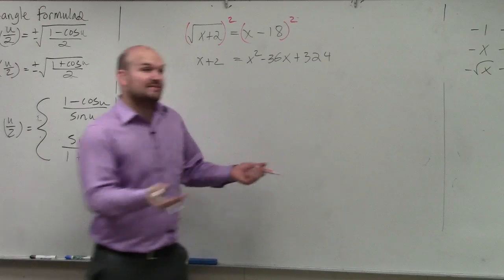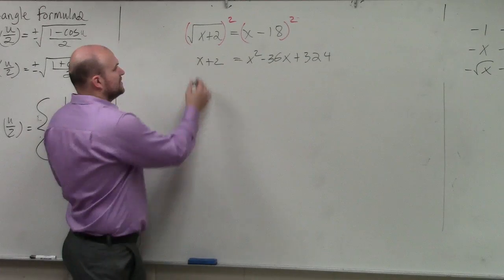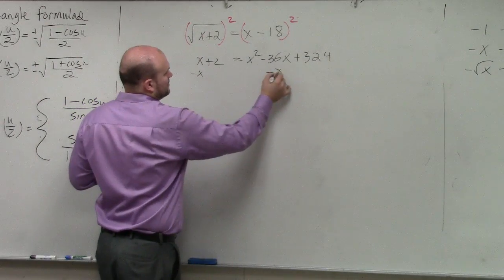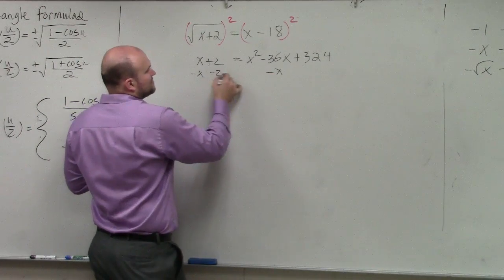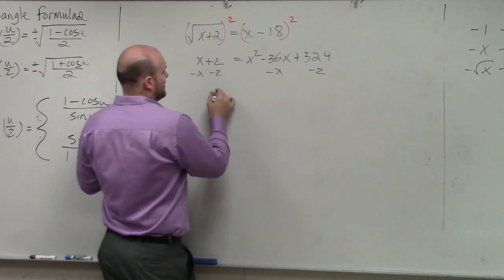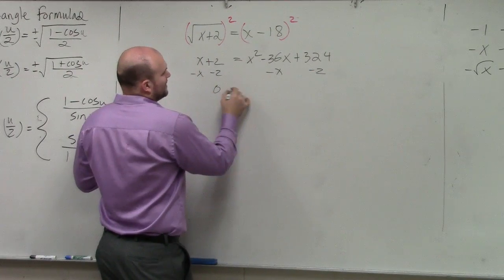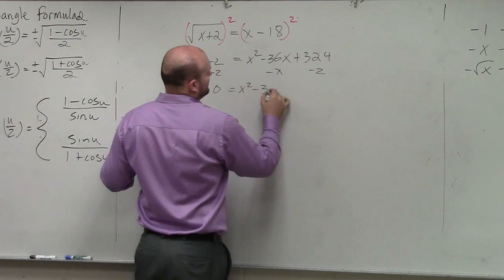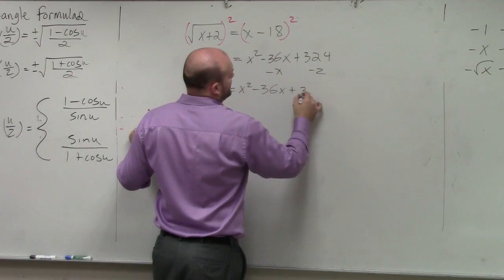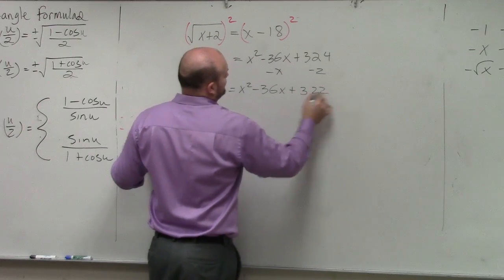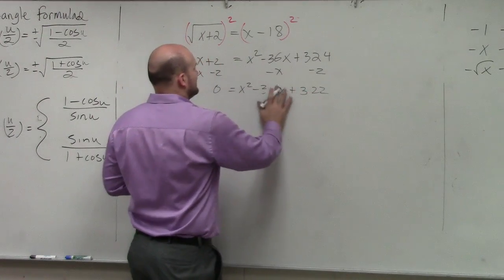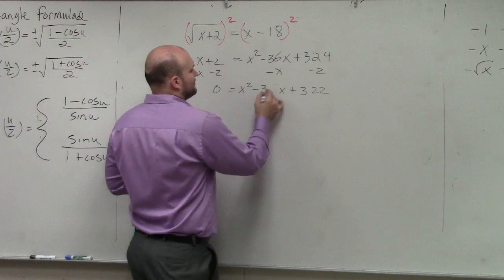Now, this is a quadratic, so I have to subtract x and subtract 2. So I have 0 equals x squared minus 36x plus 322. Wait — 37. Thank you, I forgot to do that.